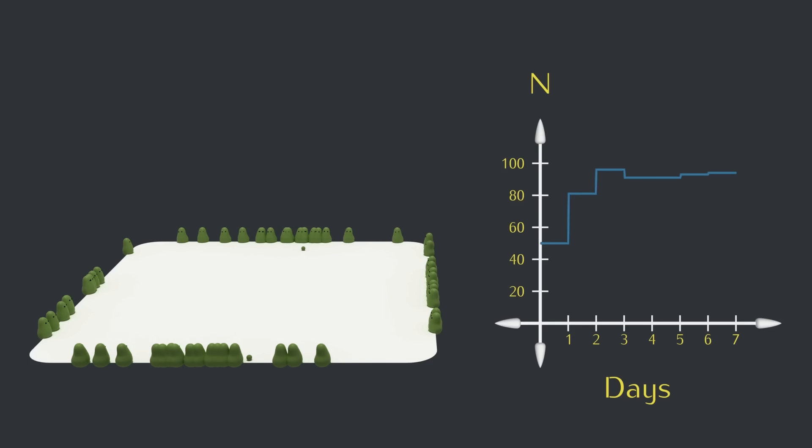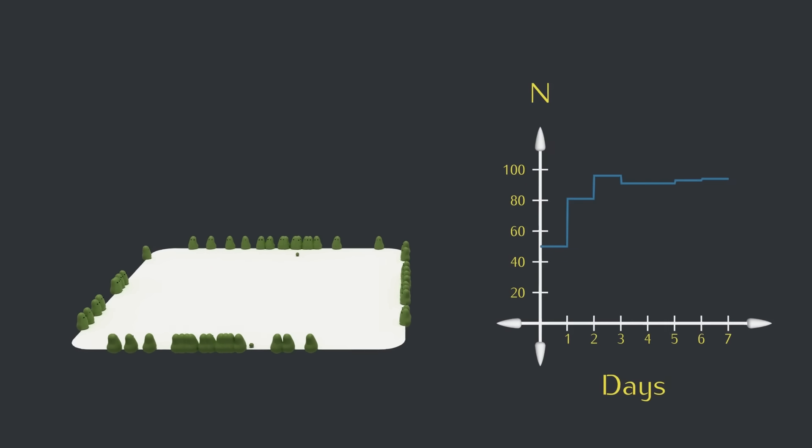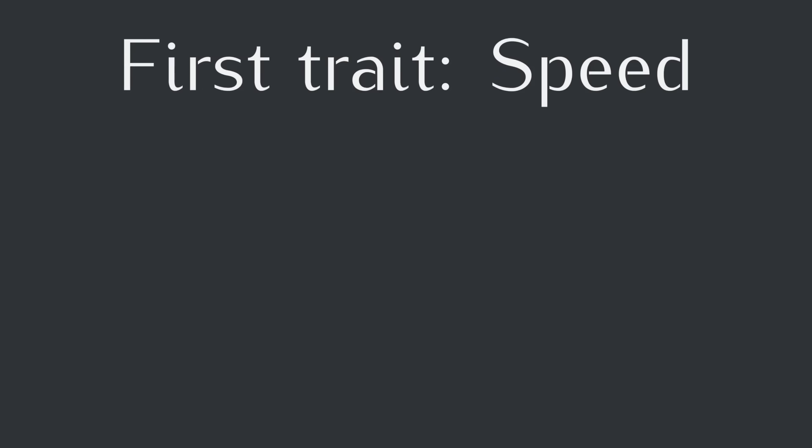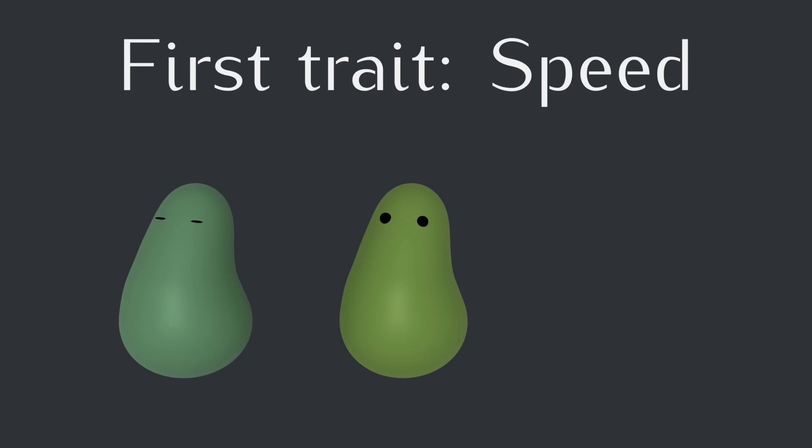Once we allow mutations, the variation will give some creatures an advantage and we'll start seeing some natural selection of traits. So let's turn on mutations and see what happens. Let's start out with one trait varying, speed. Each time a creature replicates, there's a chance that a mutation will give the new creature a slightly lower or slightly higher speed.